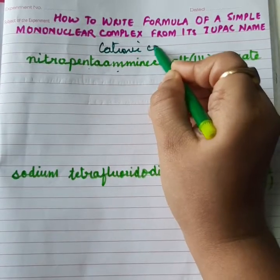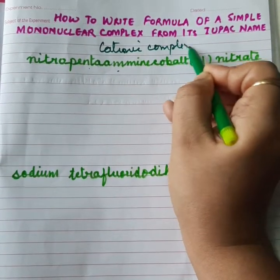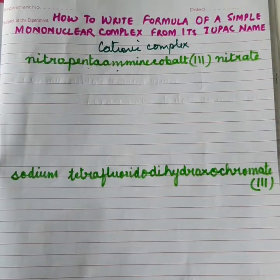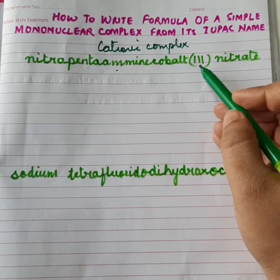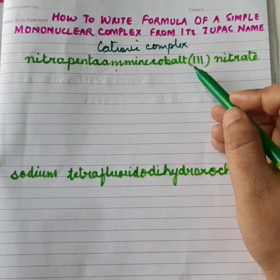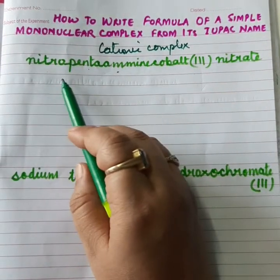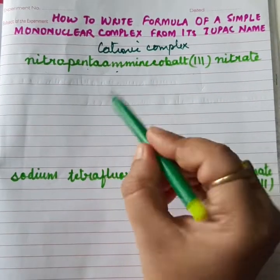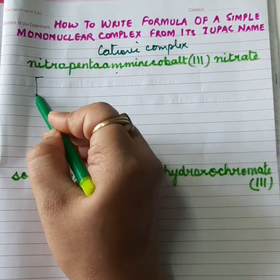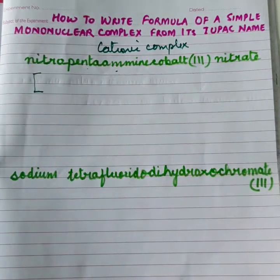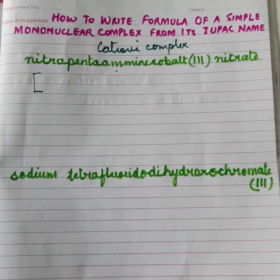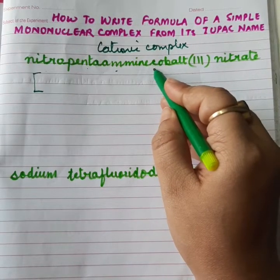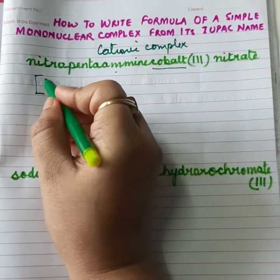Dear students, whether we have cationic complex or anionic complex, there is no difference in the rule. So first of all, we are going to write the cation. Since we are coming to know that cation is a complex part, we will start this cationic part with a bracket. Then, the first thing to be written is the symbol of the central metal atom or ion. Here, central metal atom is cobalt, so I will write here Co.